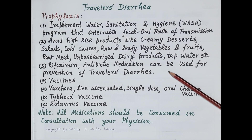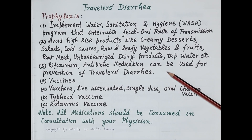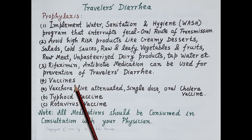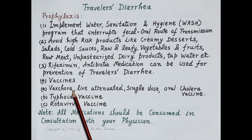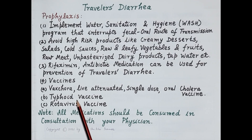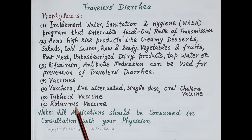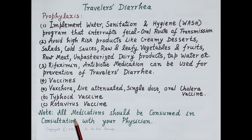Rifaximin is effective and safe and is the drug of choice for prevention of travelers' diarrhea; azithromycin and fluoroquinolones are not recommended for prophylaxis. Vaccines are also important: Vaxchora, a live attenuated single-dose oral cholera vaccine, is recommended for people traveling to areas where cholera is epidemic or endemic. Typhoid vaccine is recommended for travelers to areas with poor sanitation. Rotavirus vaccination can prevent rotavirus, a common cause of travelers' diarrhea. All medications should be consumed in consultation with your physician.